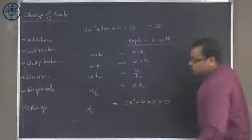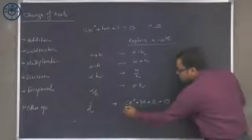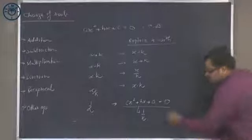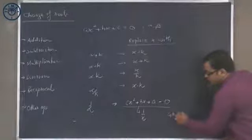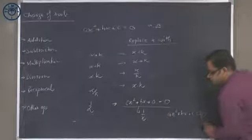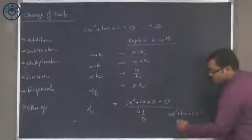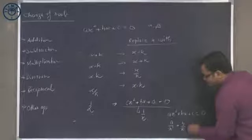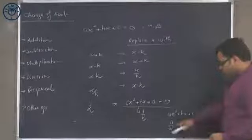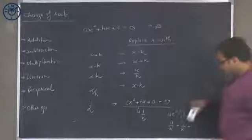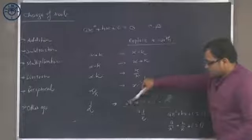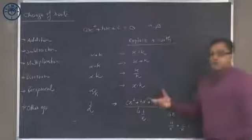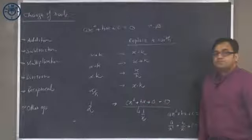This is arrived at by substituting 1 upon x. How? The equation was ax squared plus bx plus c equal to 0. If I replace x with 1 upon x, I get a upon x squared plus b upon x plus c equal to 0. Multiplying throughout by x squared gives cx squared plus bx plus a equal to 0. So for roots to become reciprocal, substitute 1 upon x.